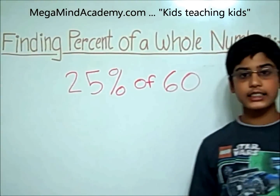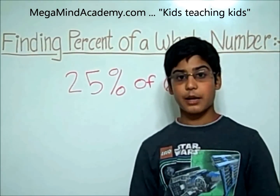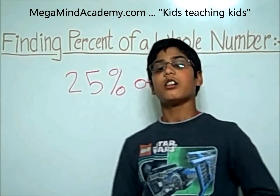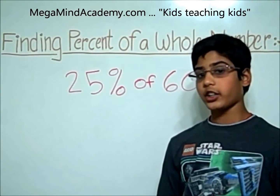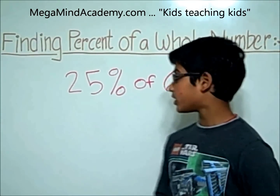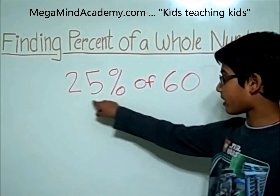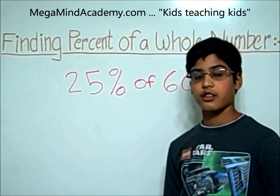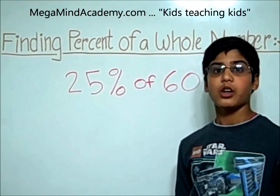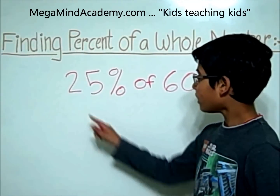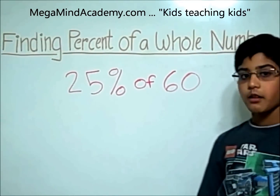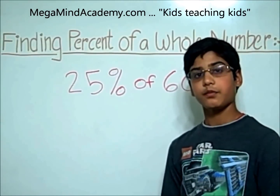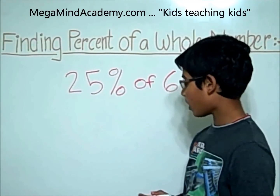So this is what we would do first. Step 1 says to convert the percent, which in our case is 25%, into a fraction. So we have to divide 25% by 100. That makes it 25 over 100.